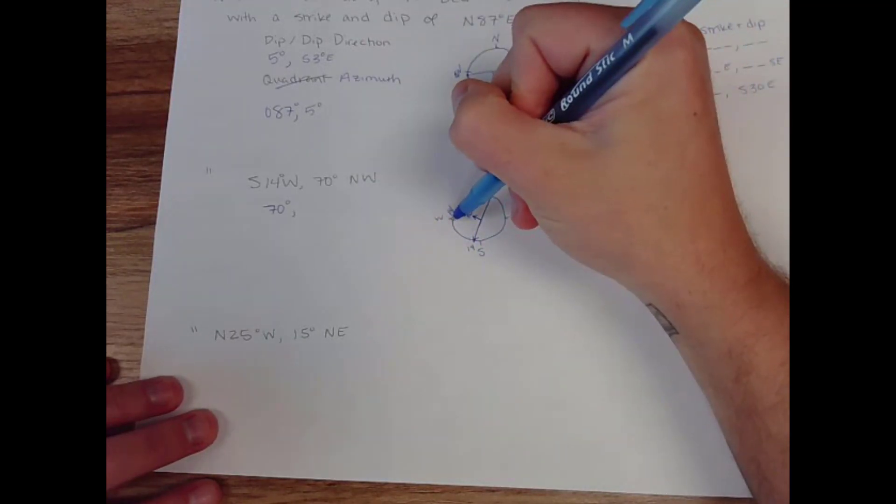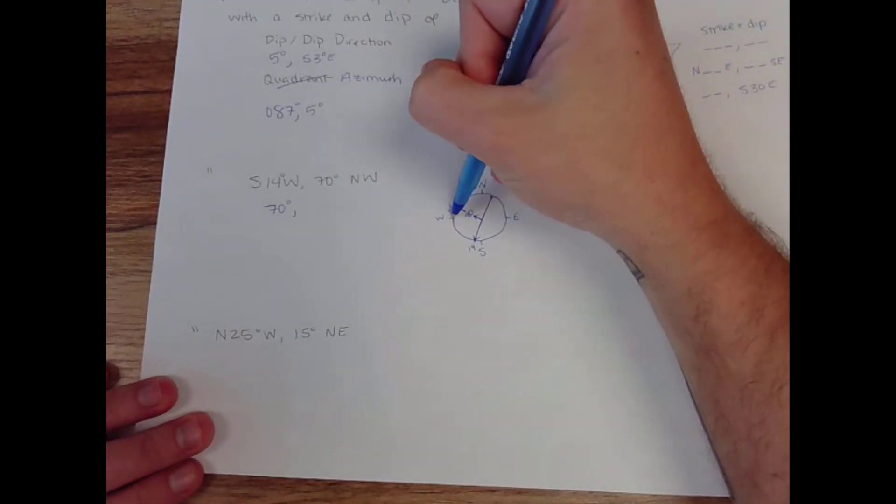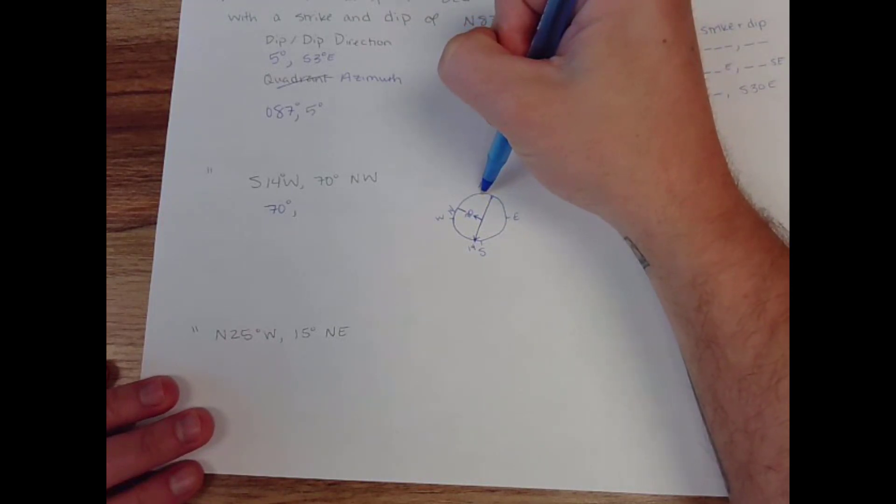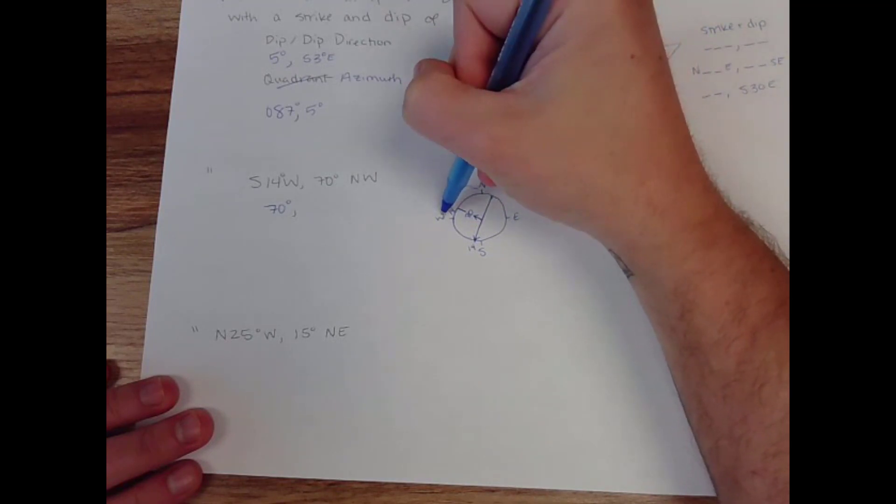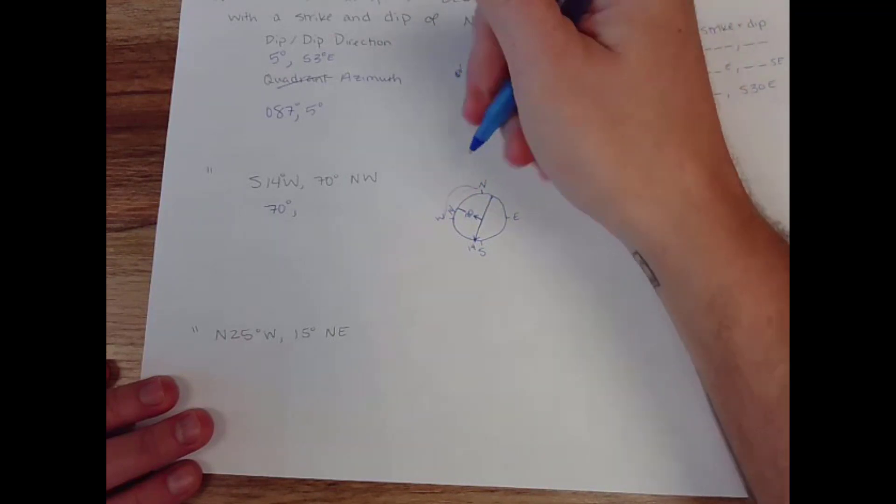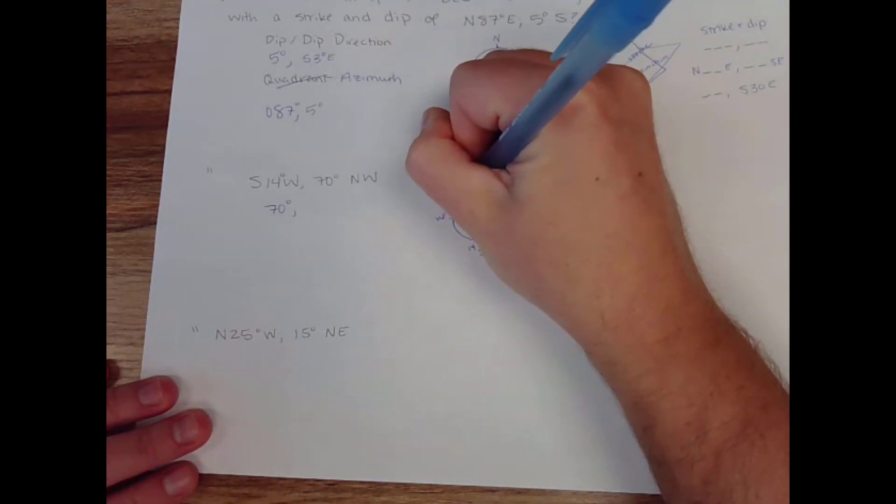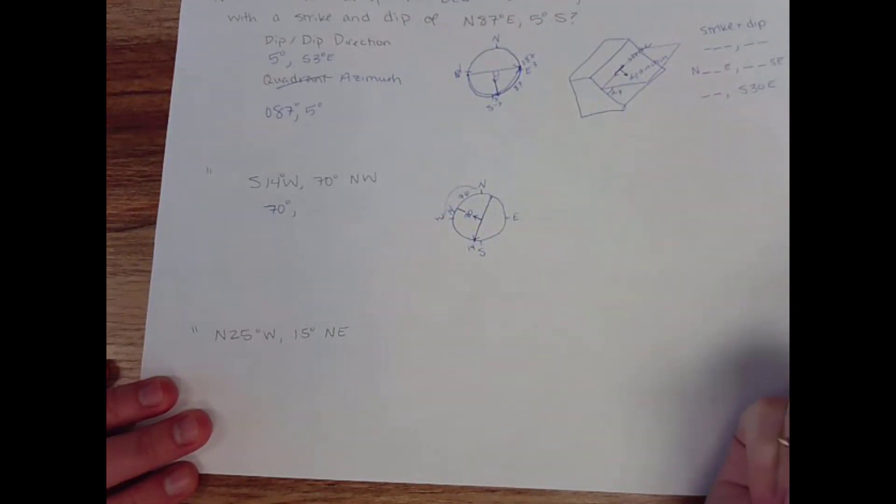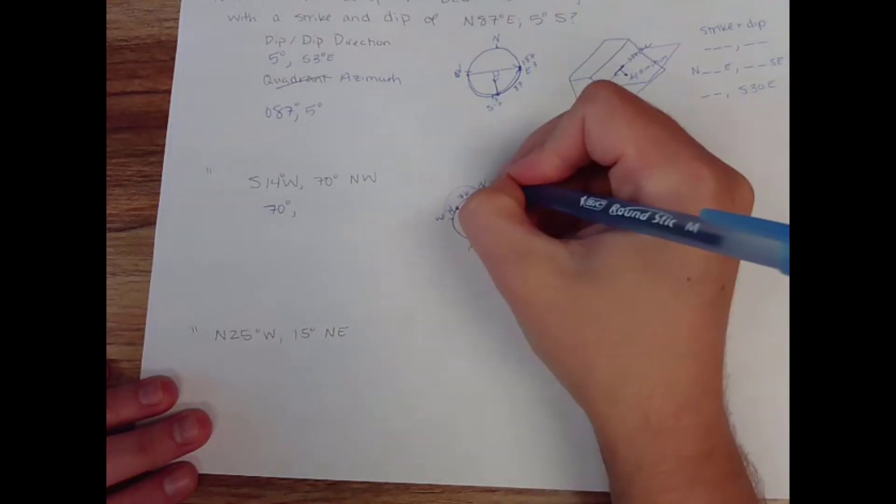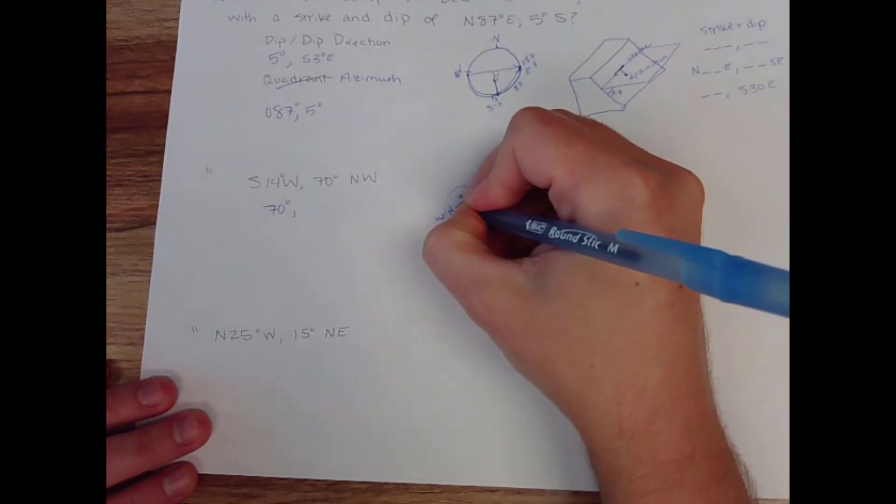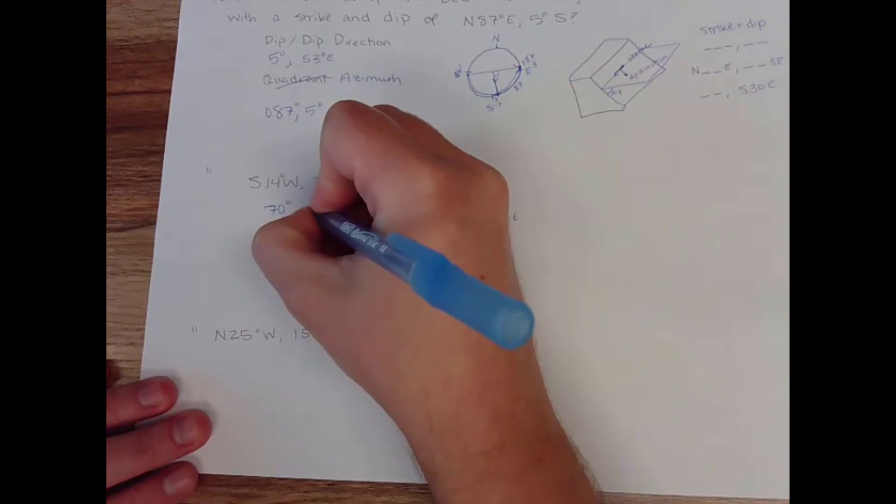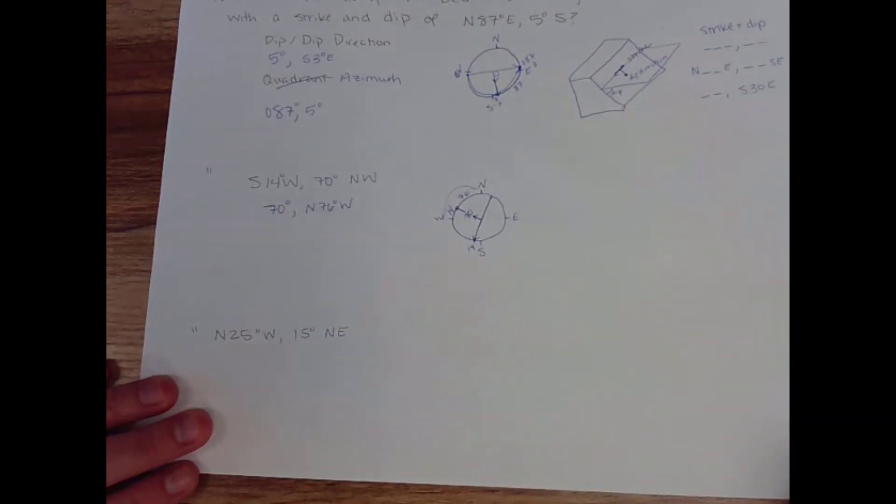Now, I can't talk about direction from west. I have to talk about direction from north. So what I'm going to do is take 90, because that's the degree amount from north to west. And I'm going to say 90 minus 14. And that's going to give me 76. So this right here is north 76 to the west. So that's my dip direction.